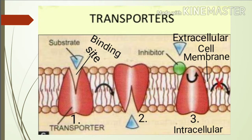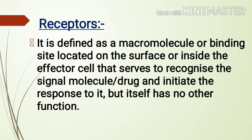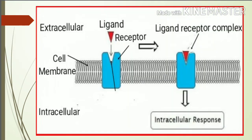अब हम receptors की बात करते हैं. Receptors एक macromolecule या binding site है जो cell के अंदर या cell के surface पर present होते हैं. इनका काम है कोई भी signal molecule या drug molecule को recognize करना ताकि drug-receptor complex form करें और फिर drug अपना pharmacological action show करे. Receptors का अपना कोई function नहीं होता. इस diagram में sky color में receptor है जो cell membrane पर present है और red color में ligand या drug molecule है. यह ligand receptor पर bind होंगे, ligand-receptor complex form करेंगे, और response produce होगा.